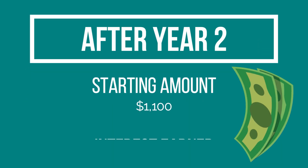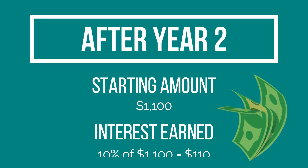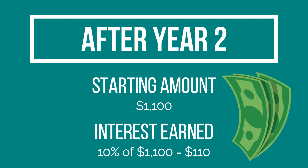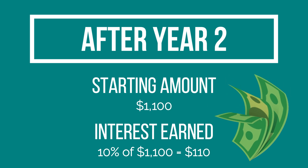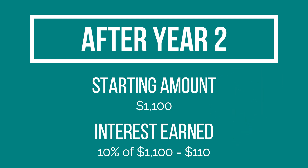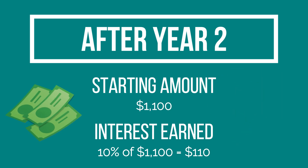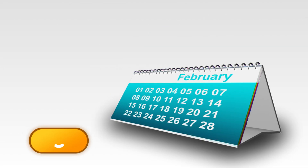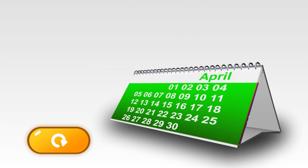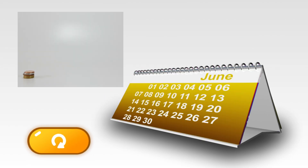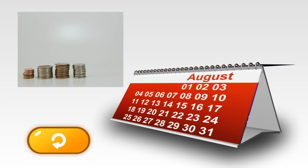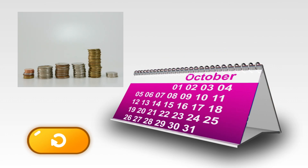But the second year, you'd earn 10% of $1,100, not just the principal of $1,000, so your earnings would be $110. This would keep repeating every year, and your balance would increase exponentially.